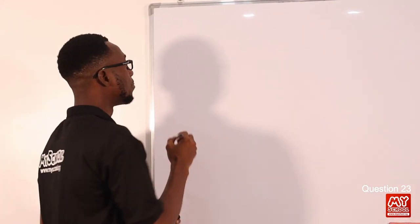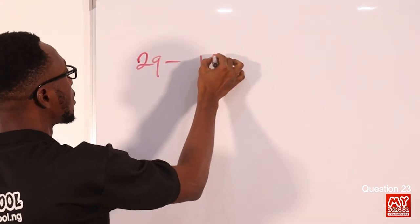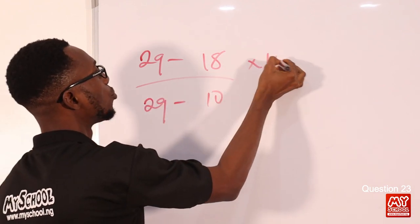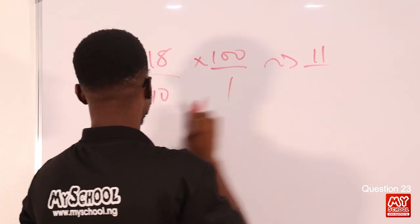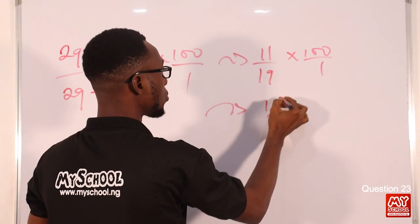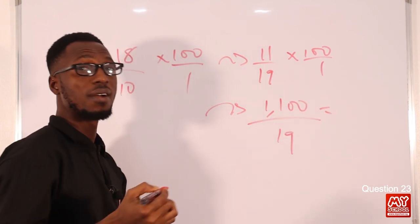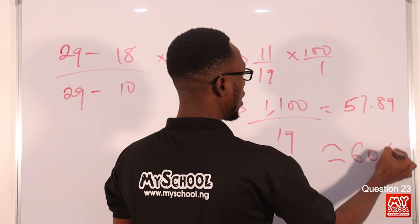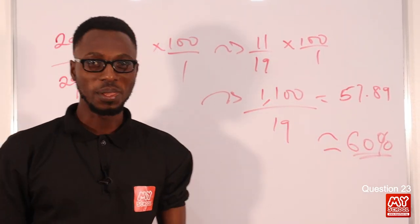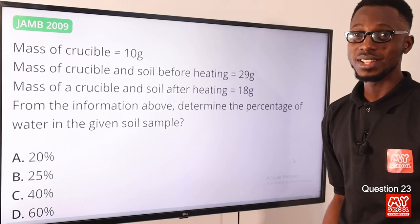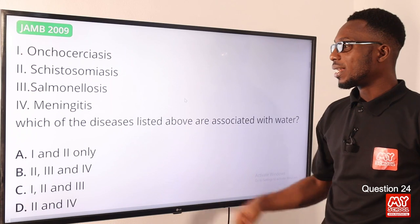Question twenty-three: determine the percentage of water in the given soil sample. Mass of water lost = 29 minus 18 = 11. Mass of fresh soil = 29 minus 10 = 19. Percentage water = (11 ÷ 19) × 100% = approximately 57.9%, which rounds to roughly 60%. Option D is the correct option.